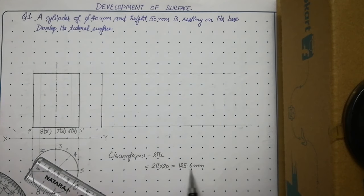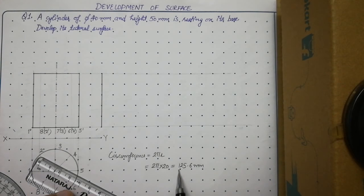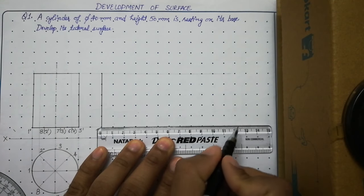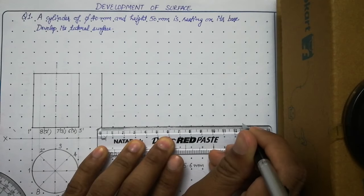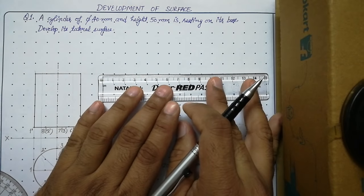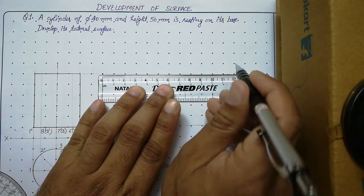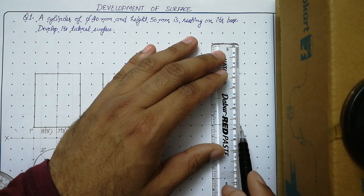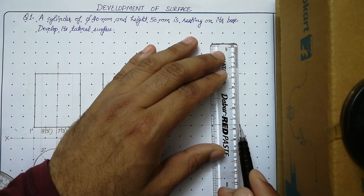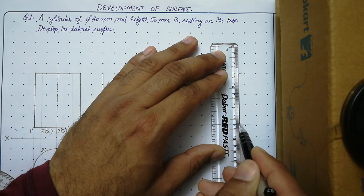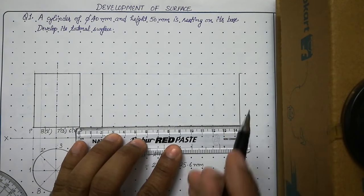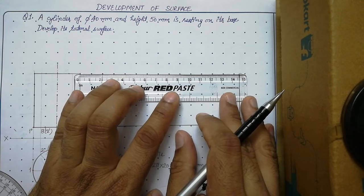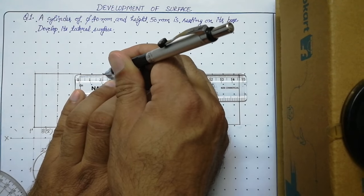The length is the circumference we calculated: 125.6 mm. Measure 125.6 on the scale — it will be approximately marked since you cannot measure 125.6 exactly on a plain scale. Mark the same distance at the top, draw the second vertical thick line of the development, then join these two points with a thick line at the bottom and a thick line at the top. This is the development of the cylinder, which is a rectangular sheet.